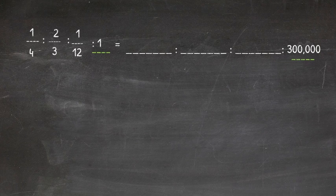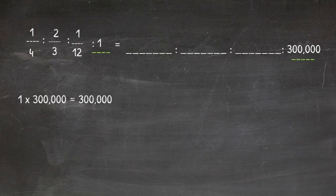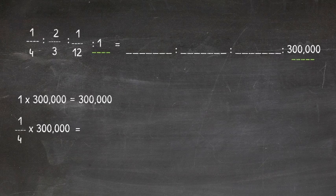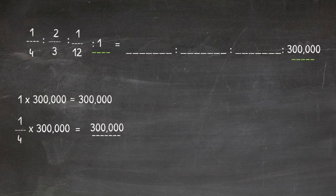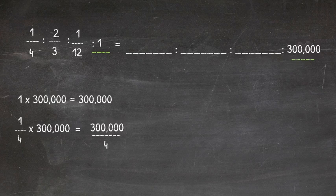One times 300,000 gives us 300,000. Now, because this is an equivalent ratio, we will use the same scale factors for all other parts. One-quarter times 300,000. Numerator times numerator is 300,000, and then denominator by denominator - four times, and remember, there's that invisible one because it's a whole number.